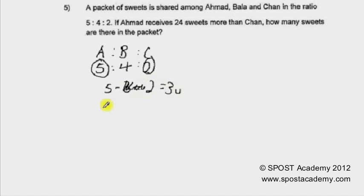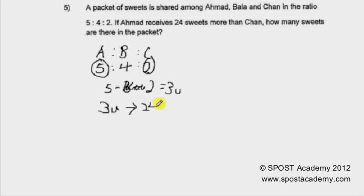They tell us that Ahmad received 24 sweets more than Chan. So 3 units equals 24 sweets, which means 1 unit is 8 sweets.